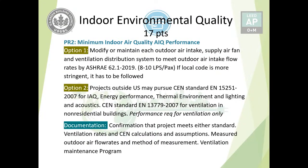Documentation for Case 1 includes confirmation that the project meets one of the standards, ventilation rates and calculations, any assumptions, compliance with 8 to 10 liters per second per person minimum for Option 1, major outdoor airflow rates and measurement methods, and a ventilation maintenance program to ensure the outdoor airflow rate does not fall below the requirement in the future.